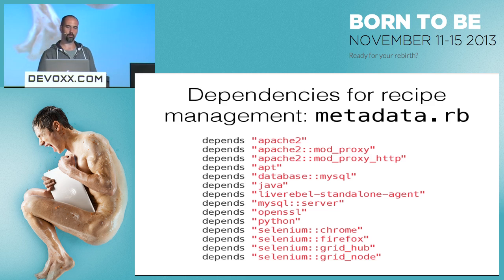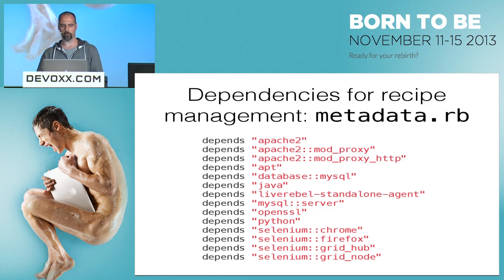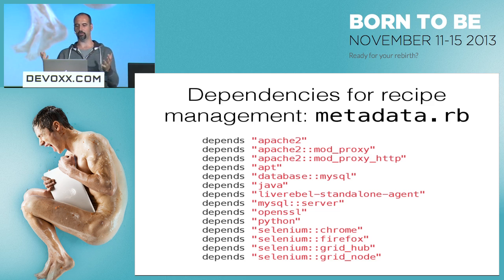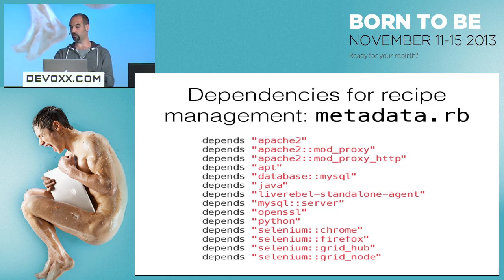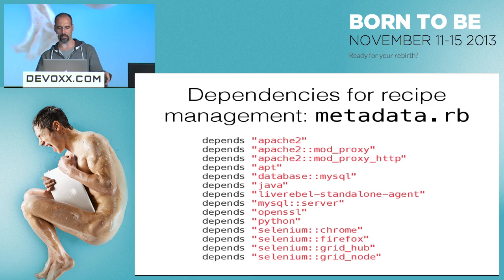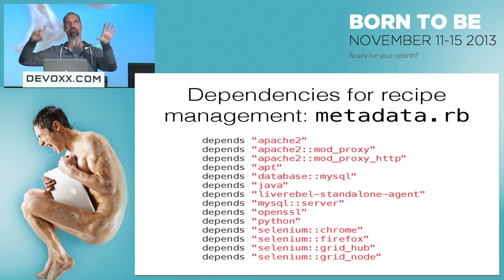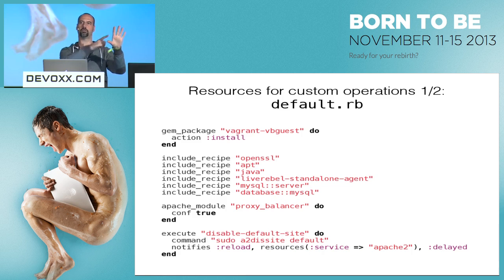When you create a recipe you declare dependencies on other recipes. For example, one of my cluster nodes installs Apache2, the apt package manager, MySQL and Java database drivers, a custom LiveRebel standalone agent recipe, MySQL, OpenSSL, Python, and everything needed for Selenium. That particular node is set up so you can run tests against an external Selenium node targeting your virtual machine running the actual code.